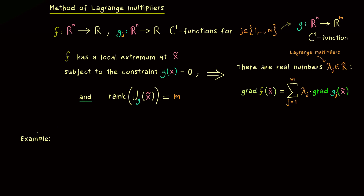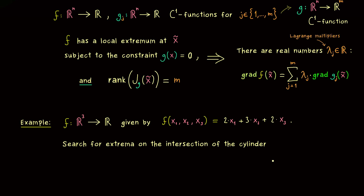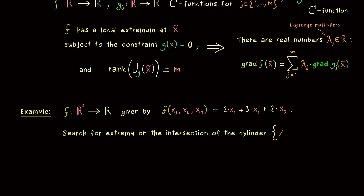This example should not be too complicated. We consider a function defined on R3: f with three inputs x1, x2, and x3, with output 2 times x1 plus 3 times x2 plus 2 times x3. This is not a complicated function, but we want to search for extrema under constraints. The constraint is given as the intersection of a cylinder with a plane. The cylinder is given by x1 squared plus x2 squared equals 2 — an equation for a circle that stretches in the x3 direction. The plane is given by x1 plus x3 equals 1, which is an affine subspace in R3.